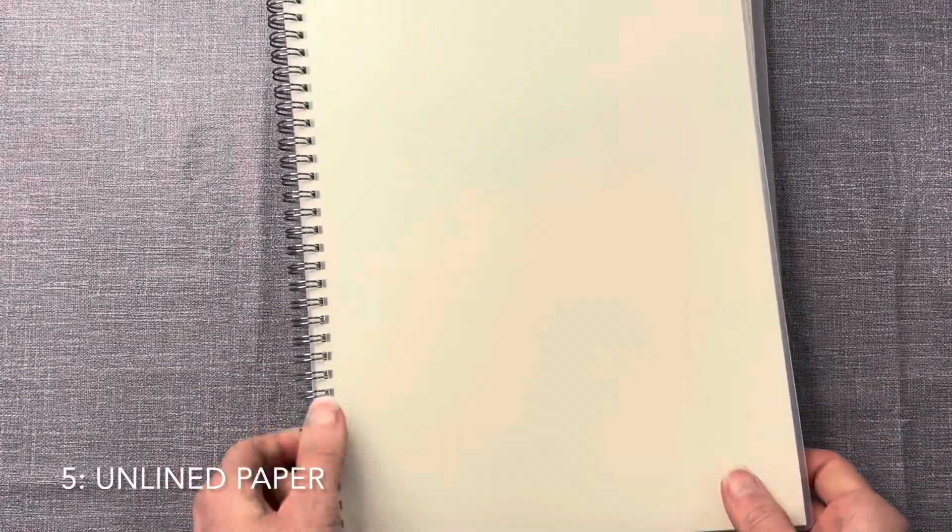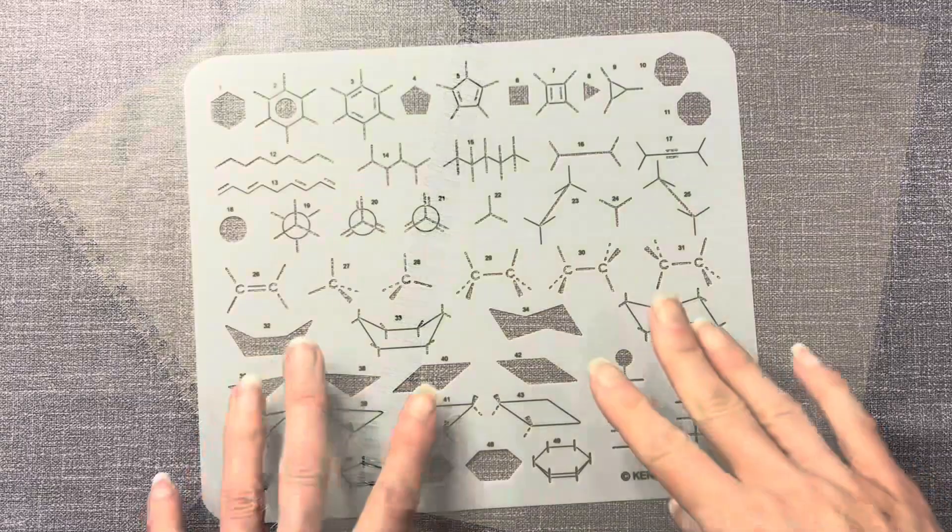Number five, unlined paper. Lined paper just doesn't work great for OCHEM. I recommend dot grid paper like this. This notebook is actually really, really nice. I also recommend blank paper or even just graph paper. Just make sure the lines aren't too dark.